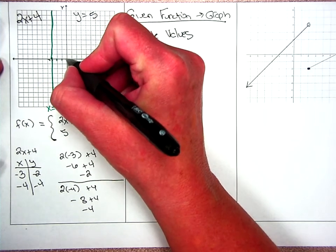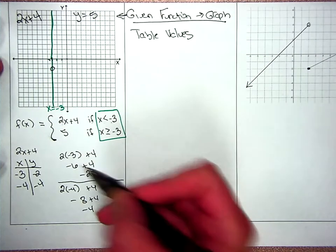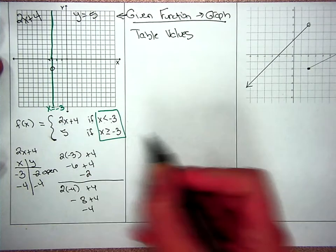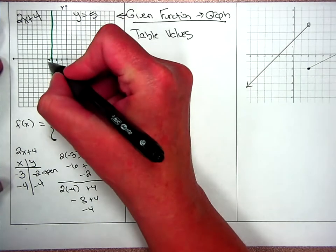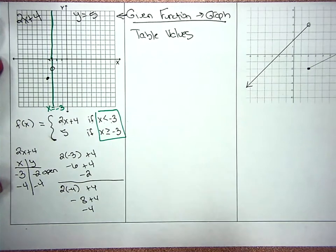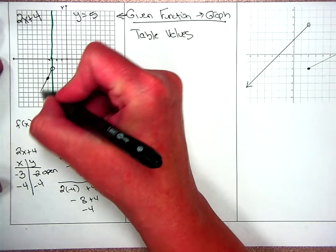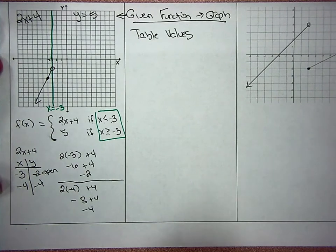Start at the origin always. Go left 3 and down 2. I did make an open circle there because I noticed that that was a less than sign. And negative 4 negative 4 goes right there. I have a line going down to negative infinity.